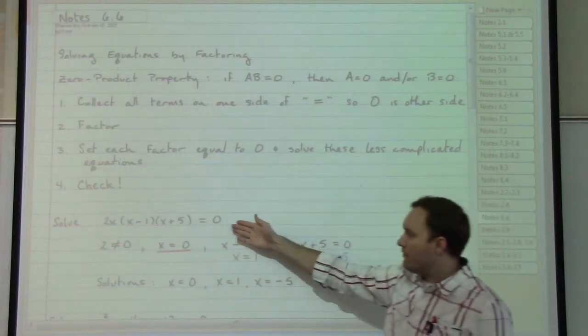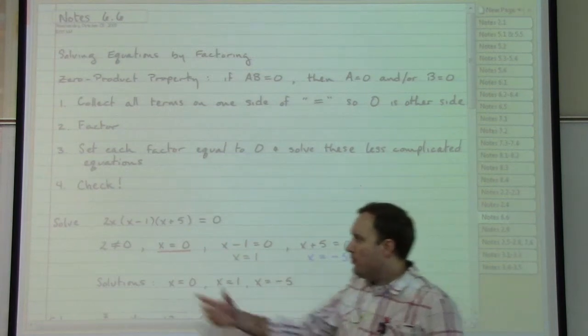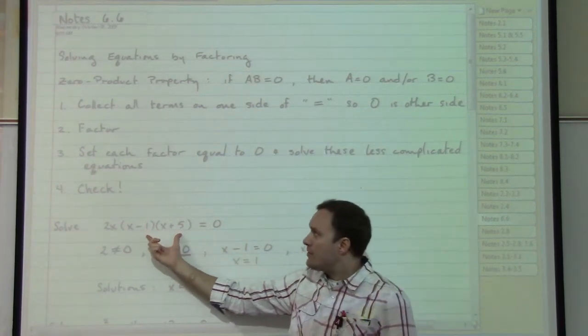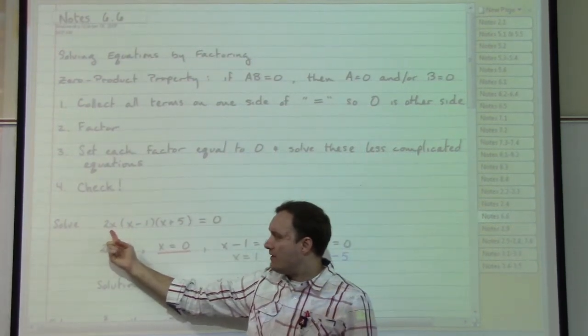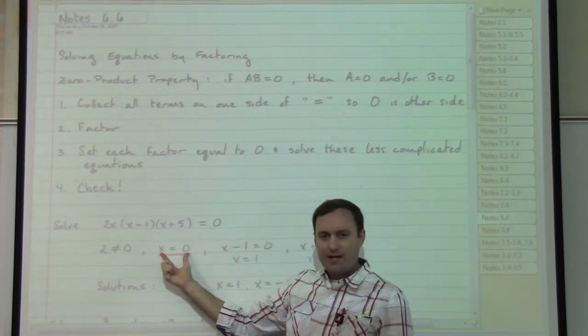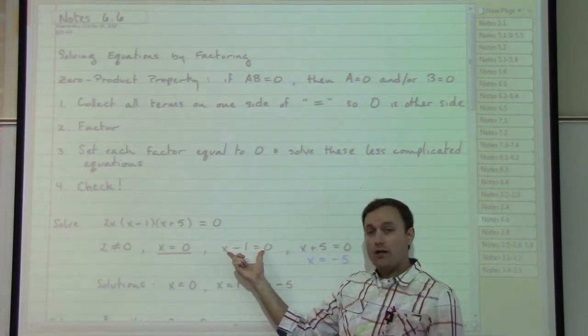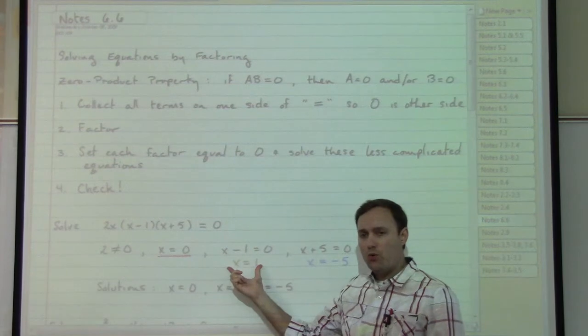So in this particular first example, we already have the equal zero, and to boot, we already have everything factored. So that means that we're starting at step three, where we set each factor equal to zero. Well, the two doesn't help us, but x could be equal to zero. The x minus one factor could be equal to zero, meaning that x would be equal to one. Or lastly, the x plus five factor could be equal to zero, meaning that x would be equal to negative five.